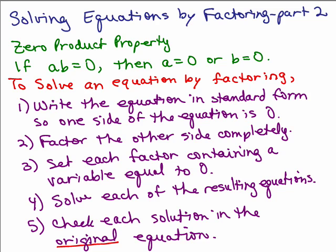This is part two of solving equations by factoring. So let's summarize. First of all, there's the zero product property which says if AB equals zero, then A equals zero or B equals zero. That is to say if you have two things equal to zero, one of those things must equal zero.